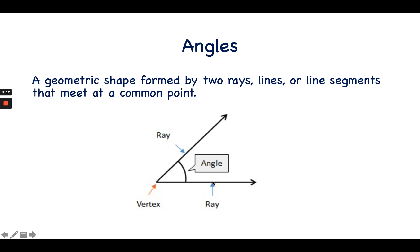They are formed by two lines, rays, or line segments that meet at a common point, and that common point is called a vertex.